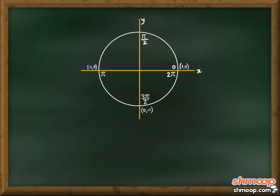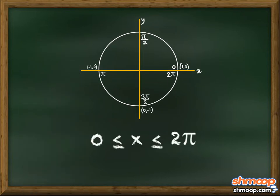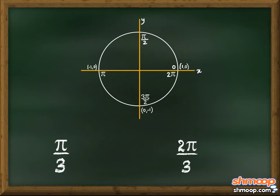Since Speedy is looking for all answers between zero and 2π, he has to consider the answers between π and 2π also. In order to find those values, he needs to add π to each of the answers he already has.